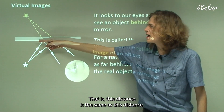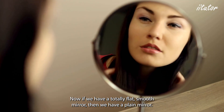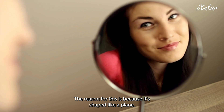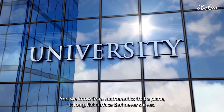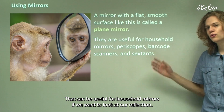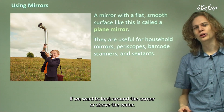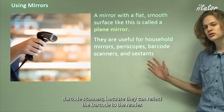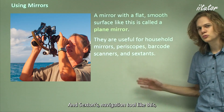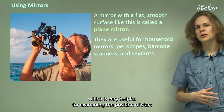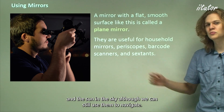If we have a totally flat smooth mirror then we have a plane mirror, because it's shaped like a geometric plane — a long flat surface that never curves. Plane mirrors are useful for household mirrors, periscopes for looking around corners or above water, barcode scanners which reflect the barcode to the reader, and sextants — a navigation tool helpful for examining the position of stars and the Sun in the sky.